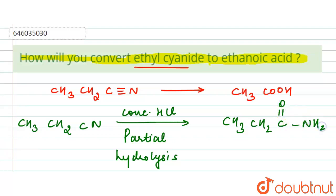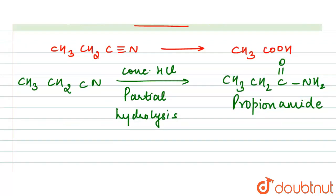So in the next step, what we will have is the use of Br2 by NaOH, and this is our Hofmann bromamide reaction.